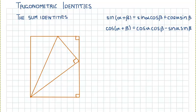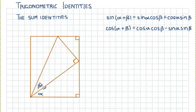The way we are going to prove this is we are going to start off with a rectangle. The angle in the bottom we are going to call alpha, and the angle in here we are going to call beta. These two lines are parallel because we have a rectangle.